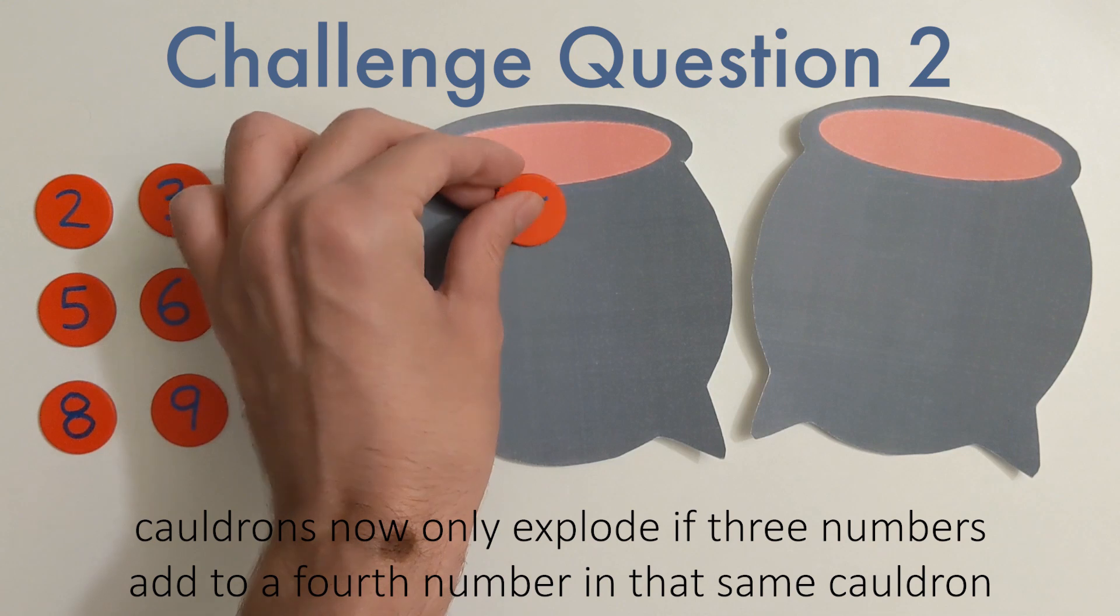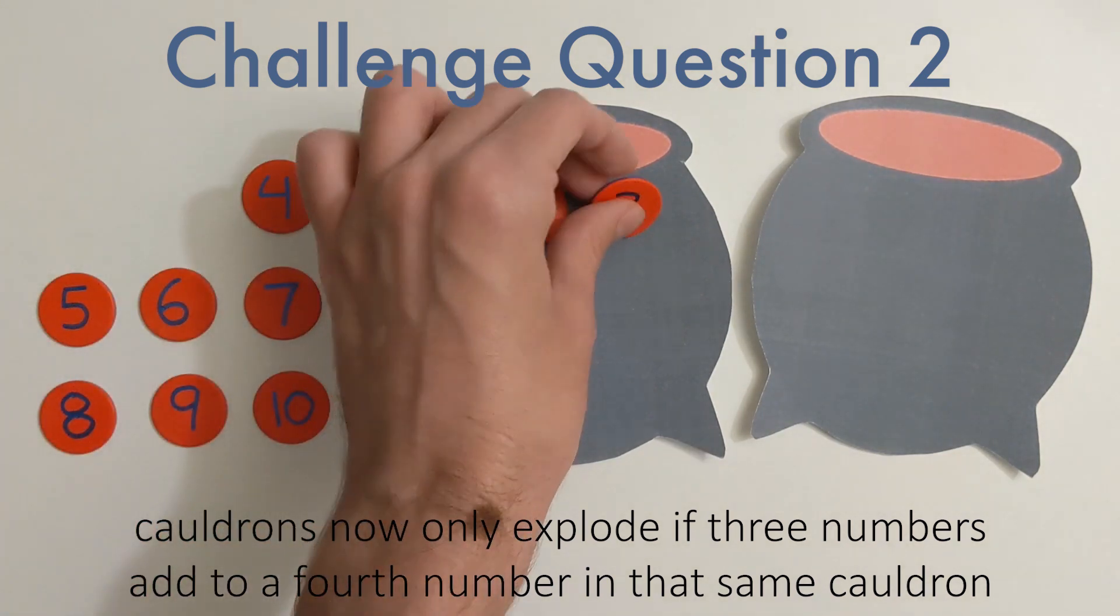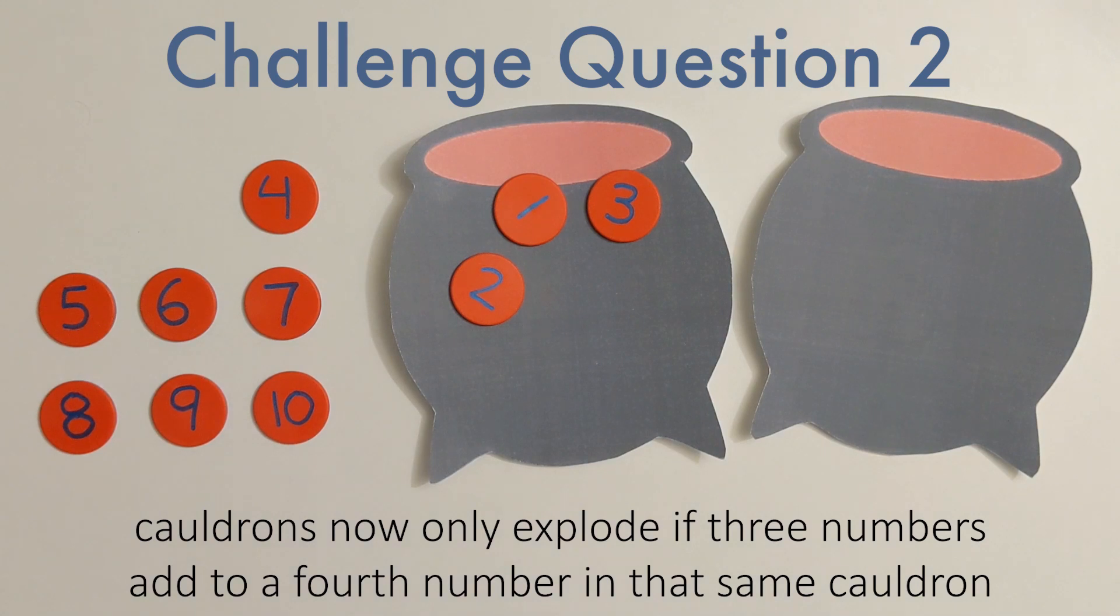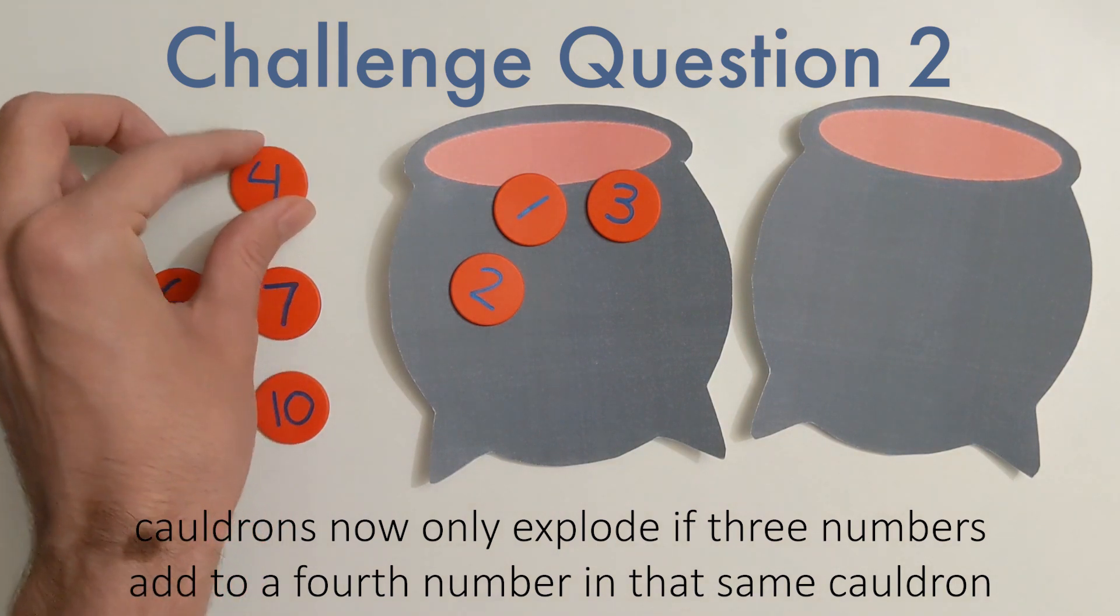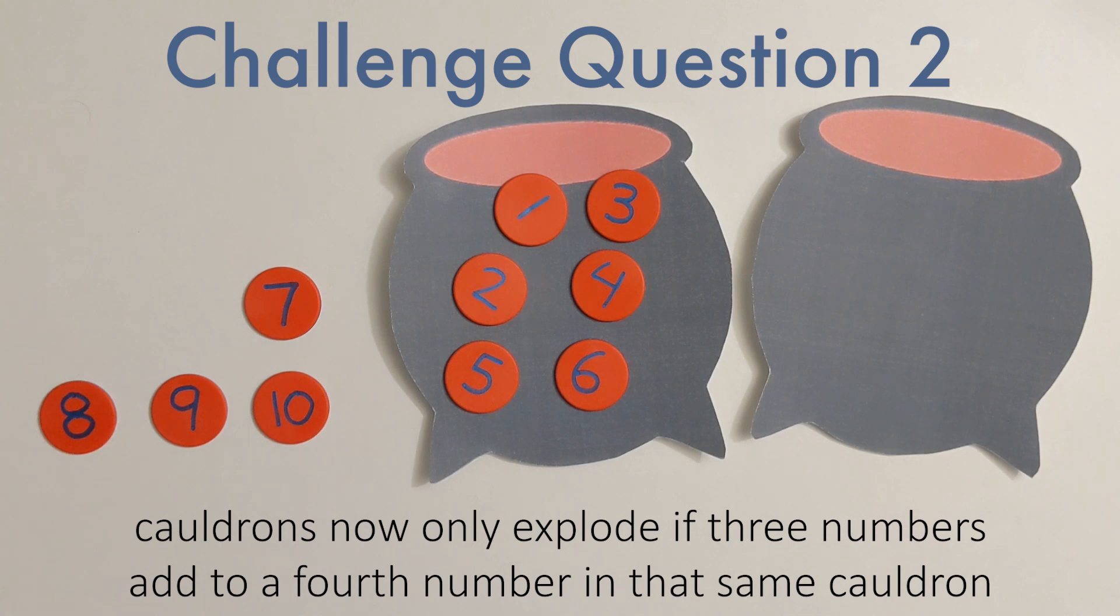So for example, if in my left cauldron here, I place the numbers 1, 2, and 3, previously it would have caused the cauldron to explode, since 1 plus 2 equals 3, but now it won't explode until 3 numbers add up to a fourth. So I could place the number 4 in the cauldron, 5 in the cauldron, but once I place 6, the cauldron will become unstable, since 1 plus 2 plus 3 equals 6.